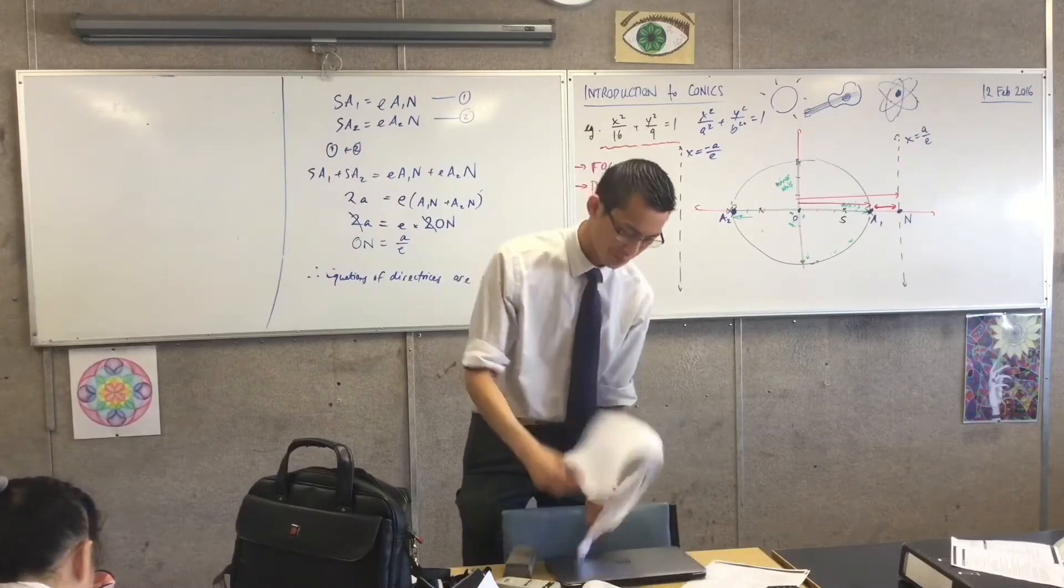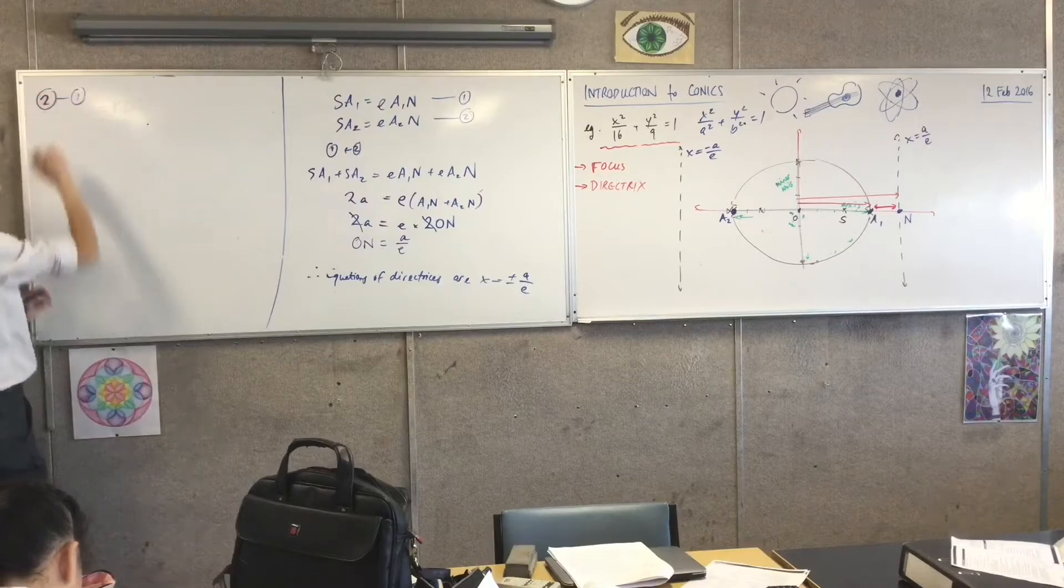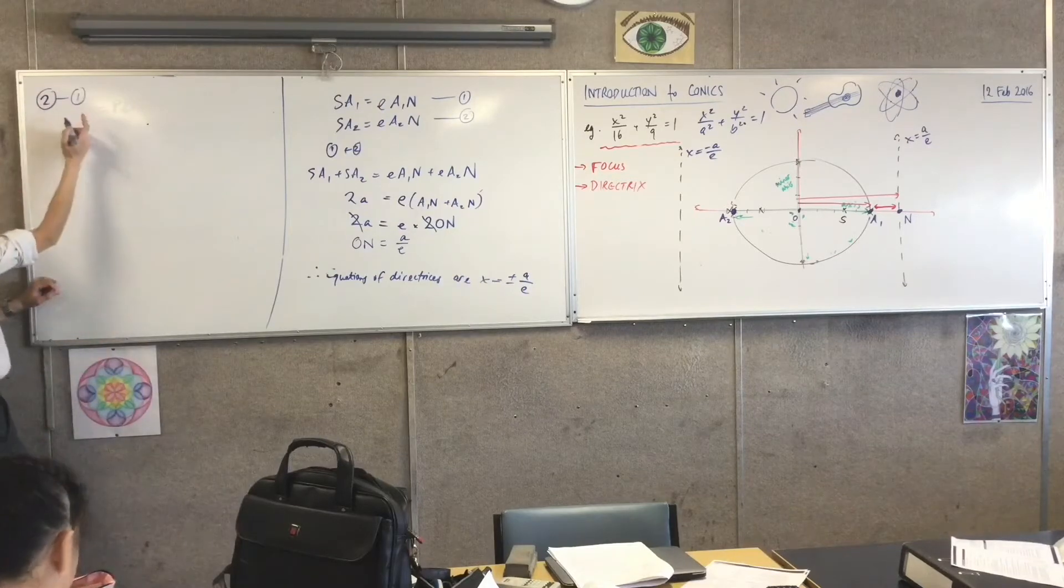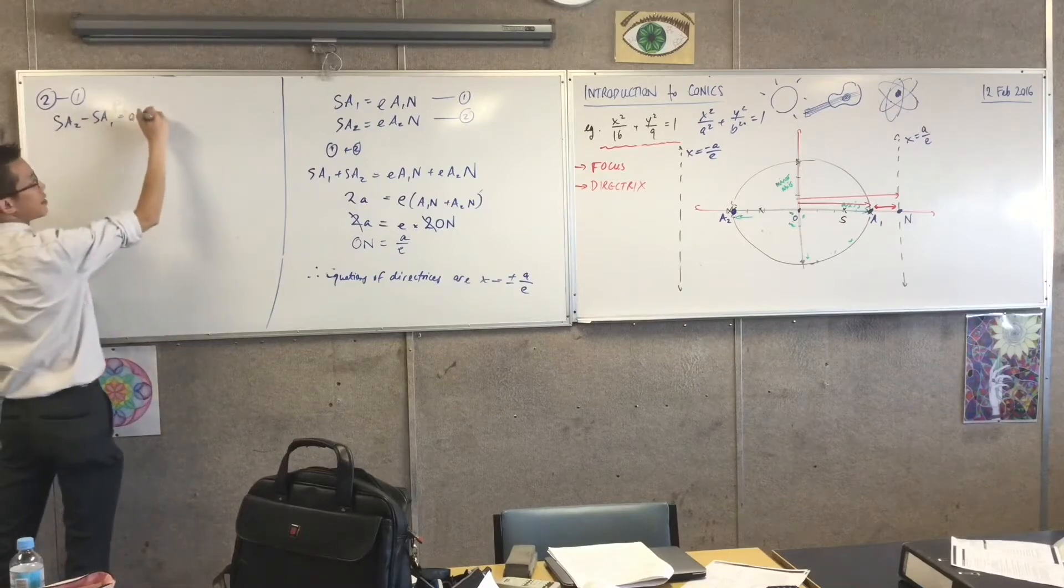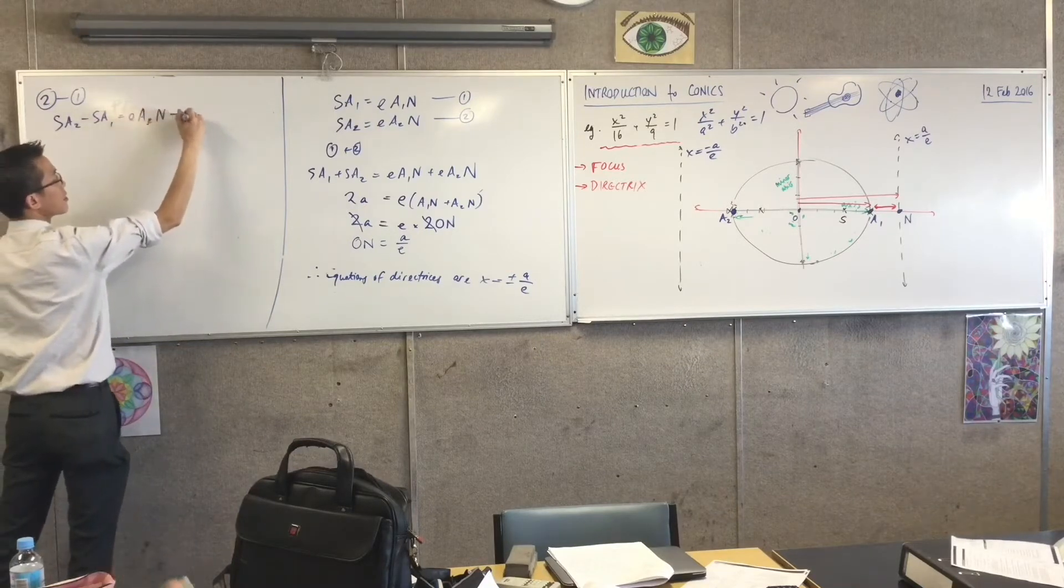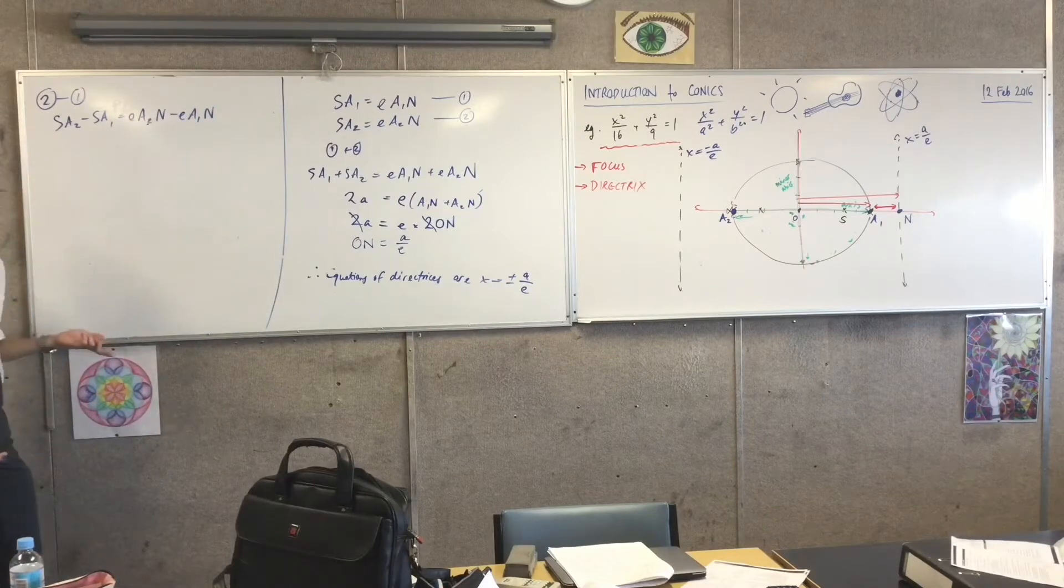Alright, so when I subtract, if I do 2 take away 1, what are we getting? So on the left-hand side, I've got this, and on the right-hand side, I have this. Is that okay? Yeah. Now, in some ways, I'm going to do very similar things.